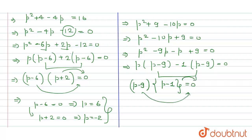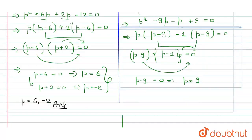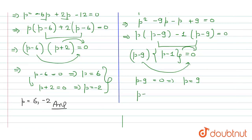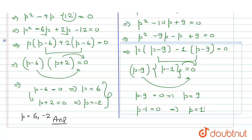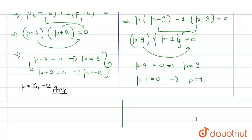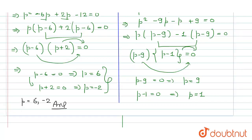Taking (p minus 9) as common, the remaining factor is (p minus 1), giving (p minus 9)(p minus 1) equals zero. Equating each bracket to zero: p minus 9 equals zero gives p equals 9, and p minus 1 equals zero gives p equals 1. So the values of p for Part 2 are p equals 9 or p equals 1.